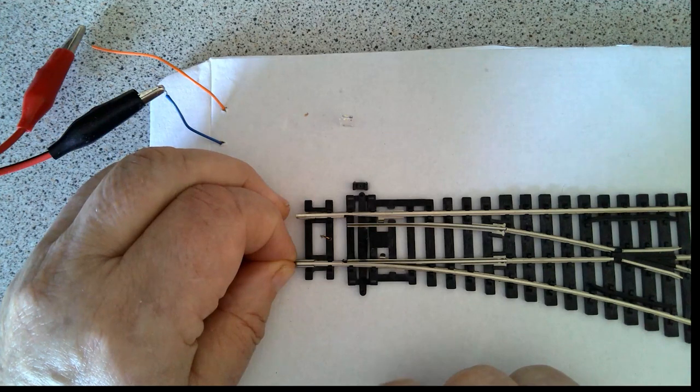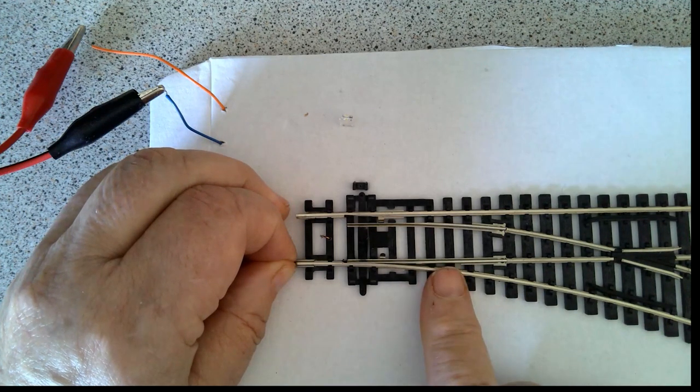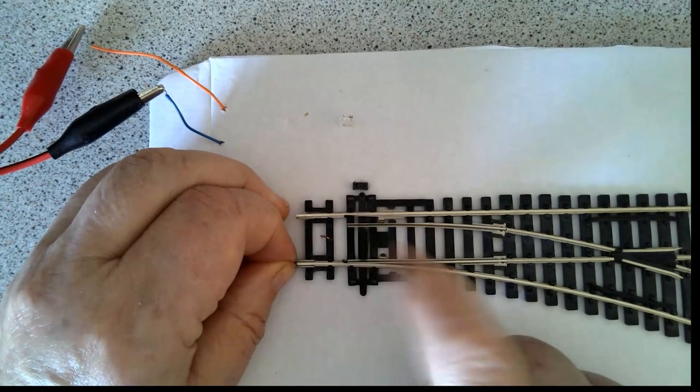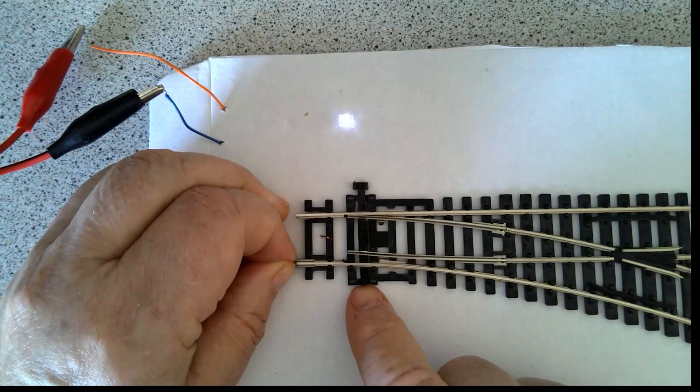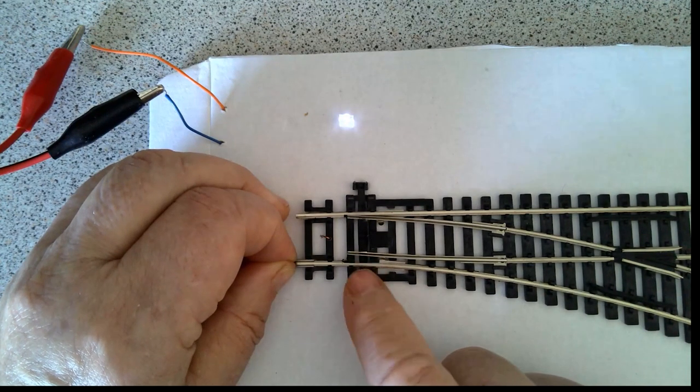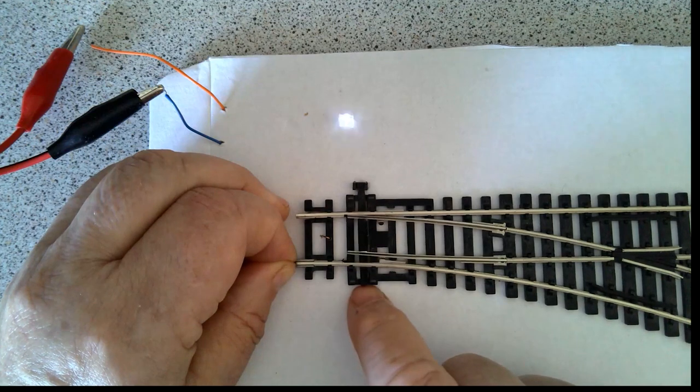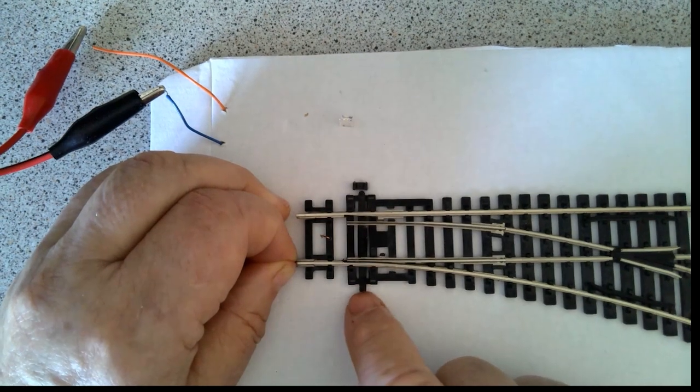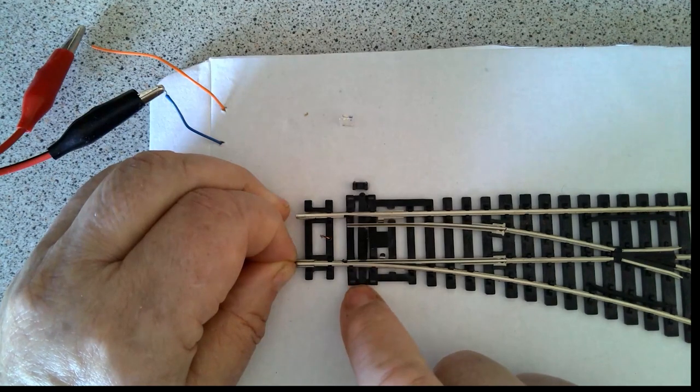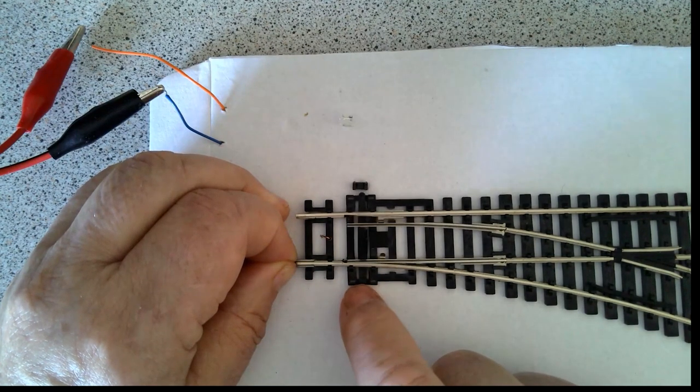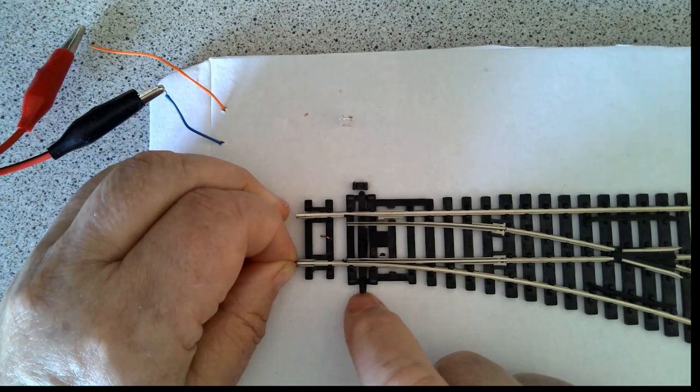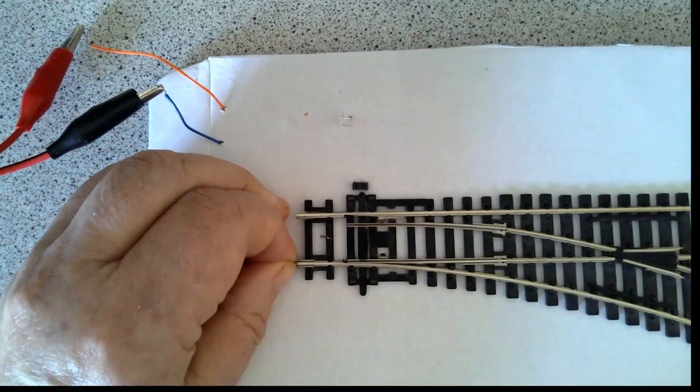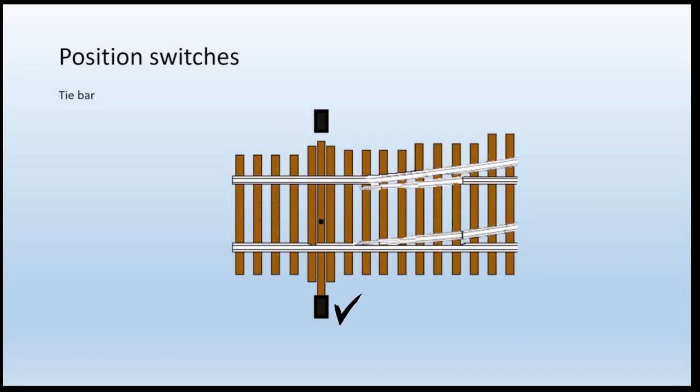Here's an example with a Hornby double O point and you can see just how small that photo interrupter is. And if I move the tie bar back and forth, when they break the beam it's detected.